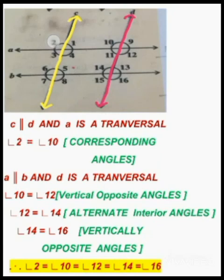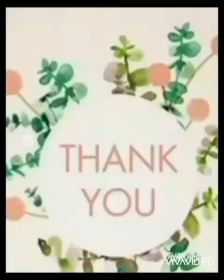So the angles congruent to angle 2 are: angle 2 equals angle 4, equals angle 6, equals angle 8. And angle 2 equals angle 10, equals angle 12, equals angle 14, equals angle 16. These are all the angles congruent to angle 2. Re-watch the video two to three times for better understanding, and complete the same sums as an assignment. Thank you and have a great day.